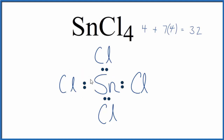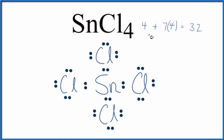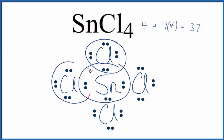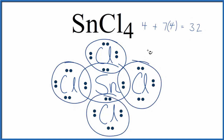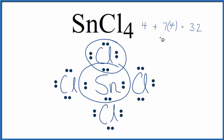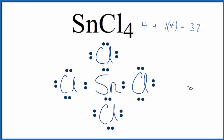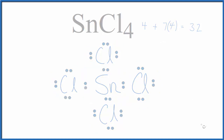Then we'll complete the octets on the chlorine atoms until we've used all 32 valence electrons. Tin has an octet, and each chlorine has an octet. So this is the Lewis structure for SnCl4. This is Dr. B — thanks for watching.